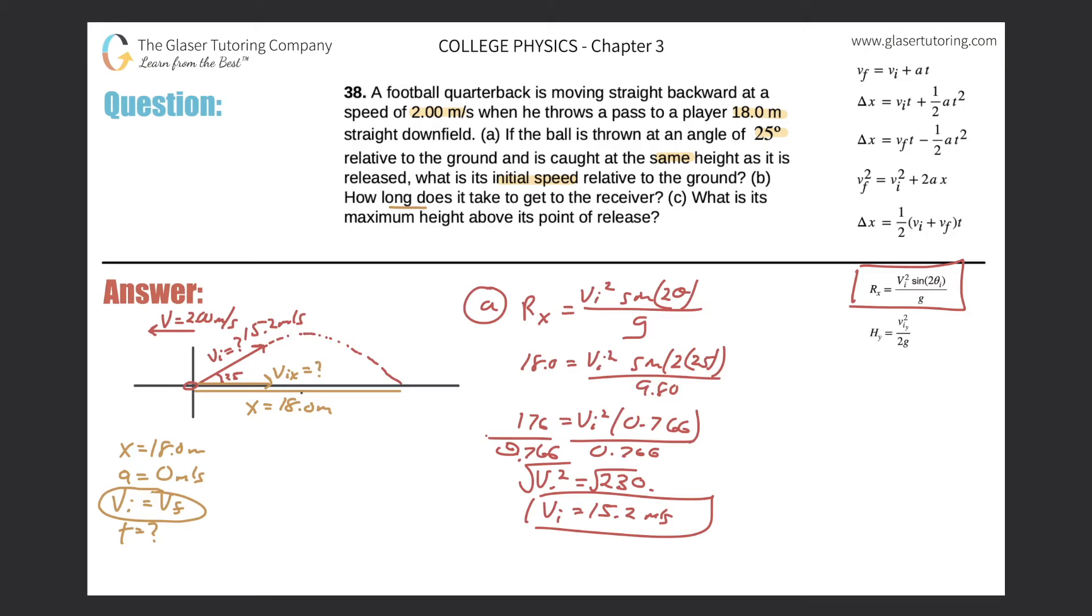So in order to solve for that X component, remember, I know this angle, I know the hypotenuse and I'm looking for the side adjacent. Therefore, I'm going to use cosine. So cosine of theta is equal to the adjacent side over the hypotenuse. Cosine of 25 will equal now the VIX over the 15.2 we just found. So the initial velocity in the X direction should simply be cosine 25 times 15.2. And we get a value of 13.8. 13.8. That's meters per second. Now that is my initial in the X.